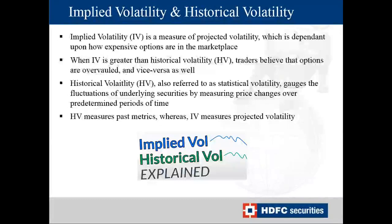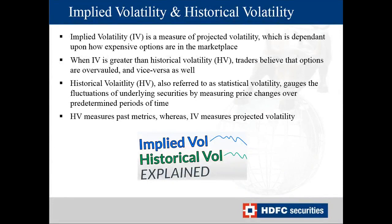Historical volatility, or HV, is referred to as statistical volatility, which gauges fluctuations of securities by measuring price change over a pre-determined period of time — it measures past metrics of how volatility behaved in option pricing. Implied volatility gives a projected or forward-looking volatility of what option pricing should be at a future date. This is the key difference between IV and HV. All data is available from the NSE website at nseindia.com.